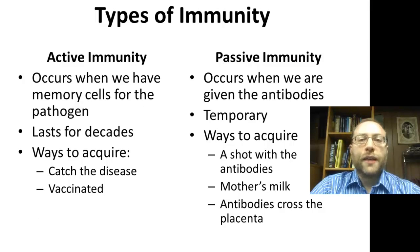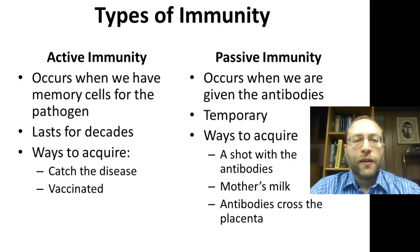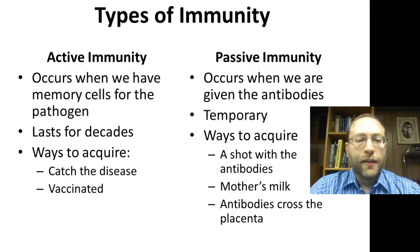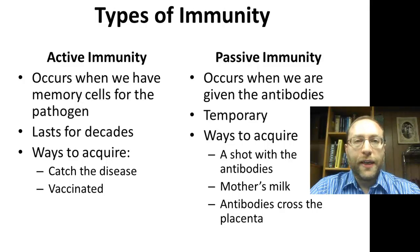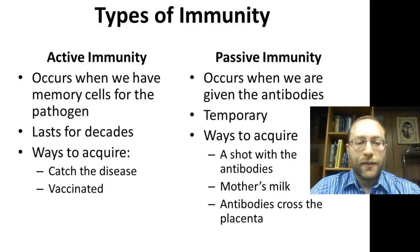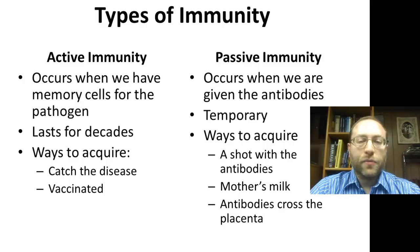There are two types of immunity. Active immunity is the kind we've discussed so far — it occurs when we have the memory cells for the pathogen. It's long-term, lasting for decades. Two ways to acquire it: you first catch the disease, or you get a vaccine.